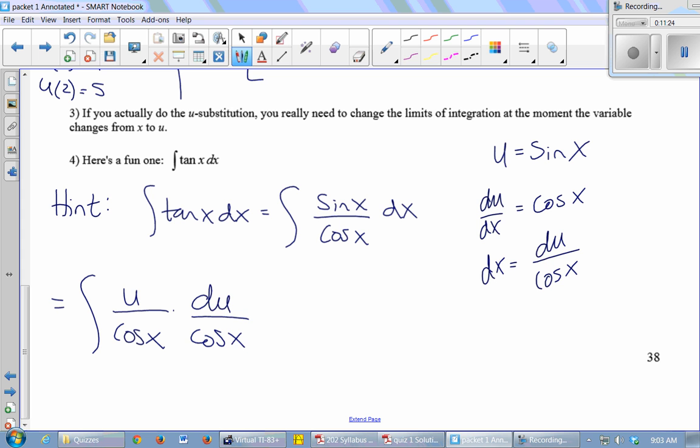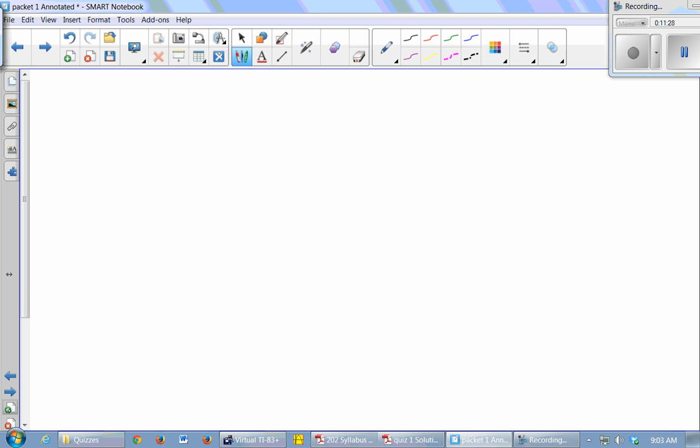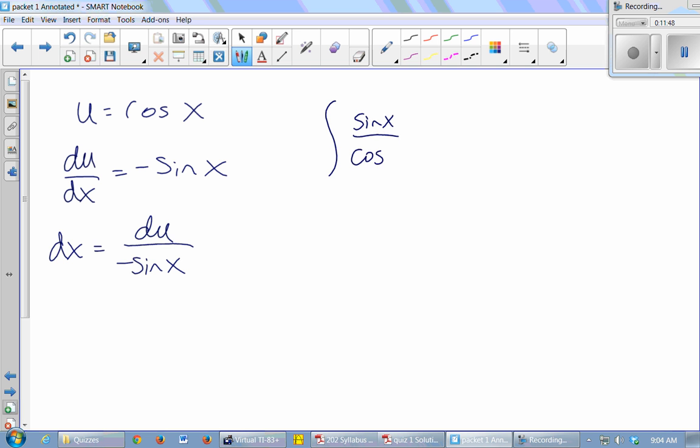So what's the only other u I could choose? Cosine x. So let u be cosine x. Then du/dx is negative sine x, so dx is du over negative sine. So now this is the integral sin x over cosine x dx. It becomes the integral of sin x over u times dx, which is du over negative sine x. And now my sines will cancel. And I have a negative still here, so I'll pull that out of the integral. So this is the integral of 1 over u du, because this u is in the denominator. So it's 1 over u.